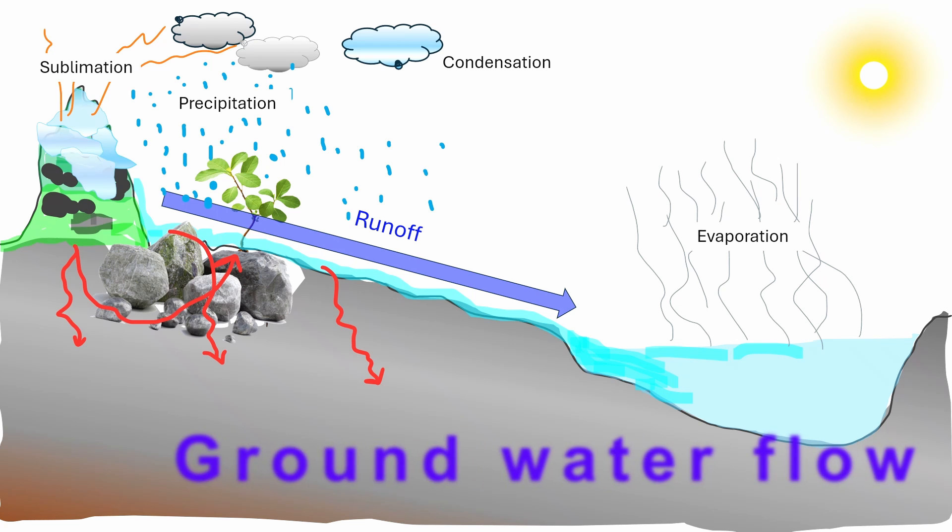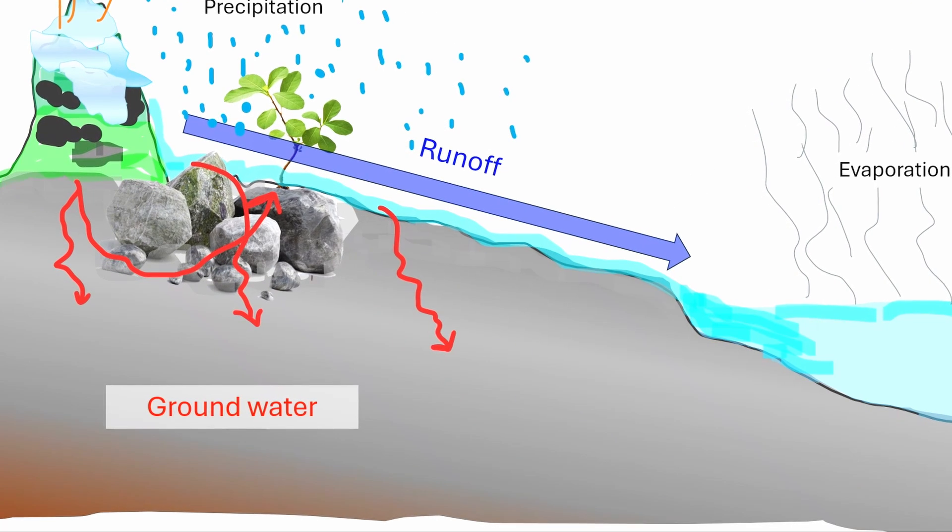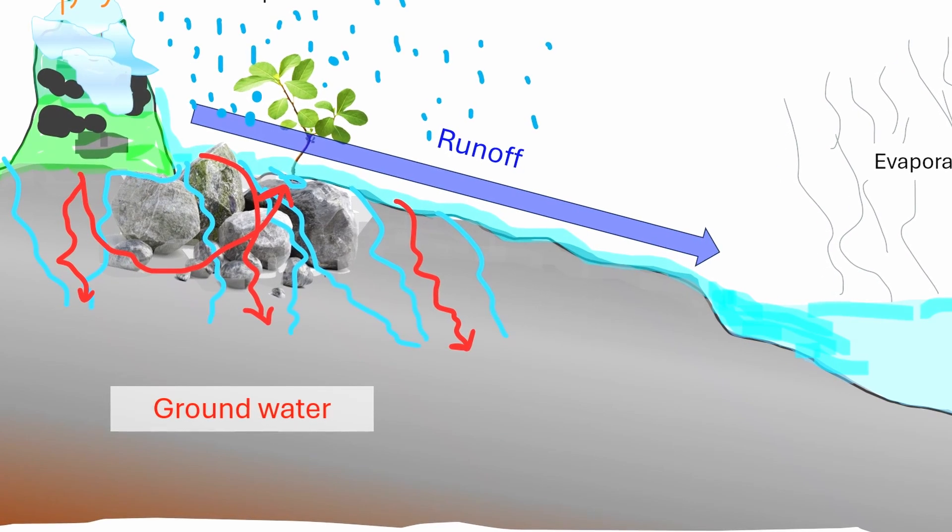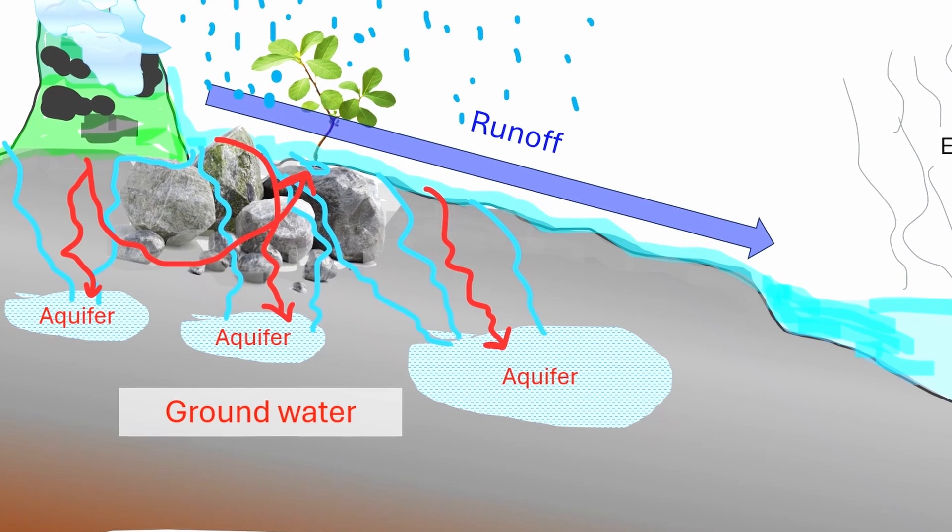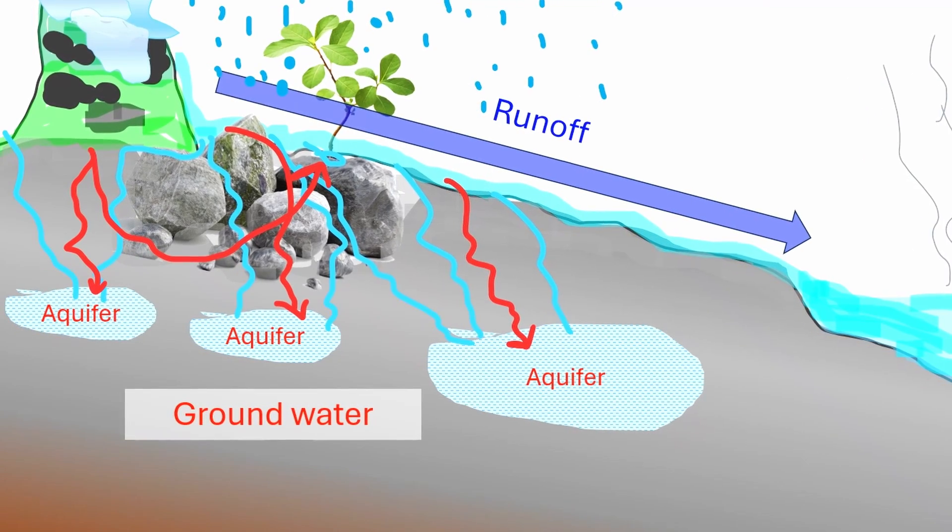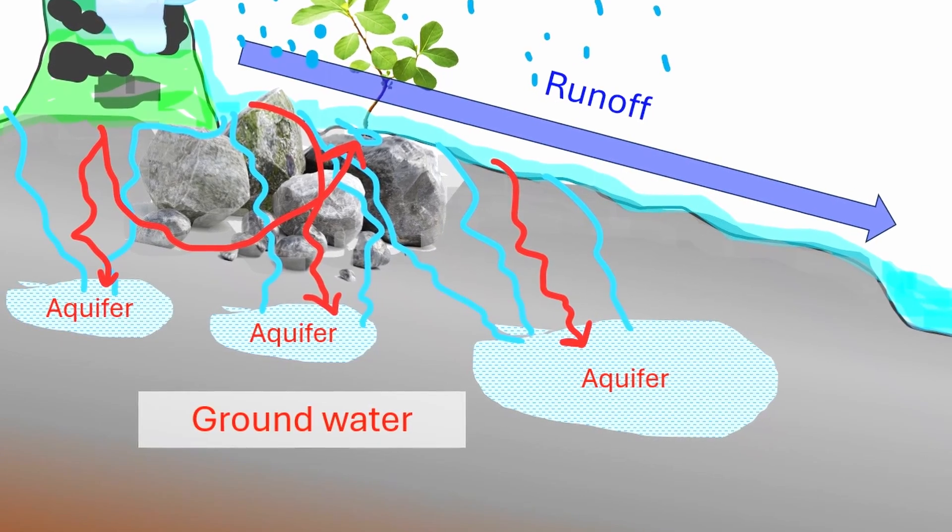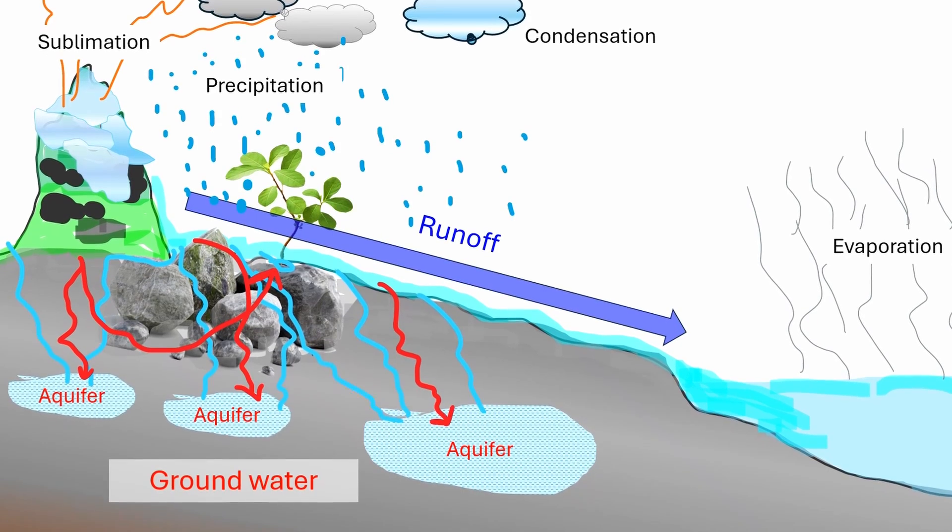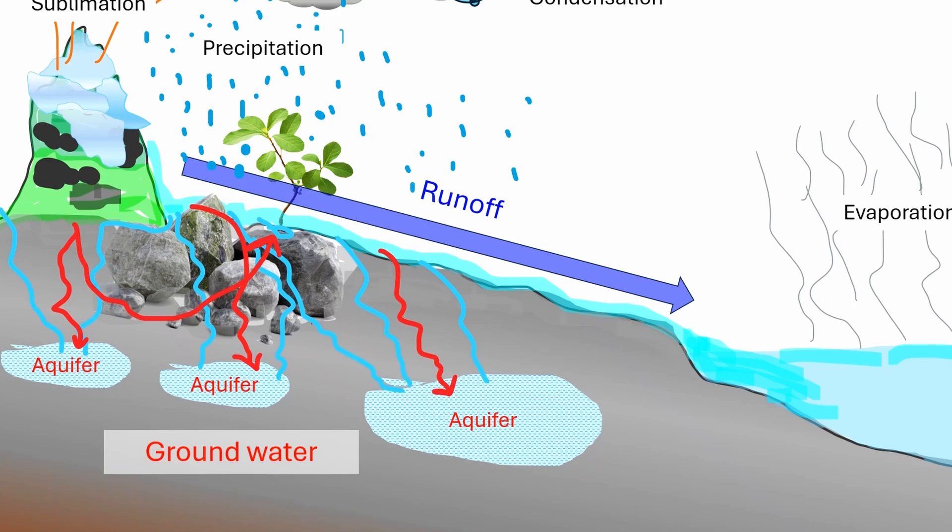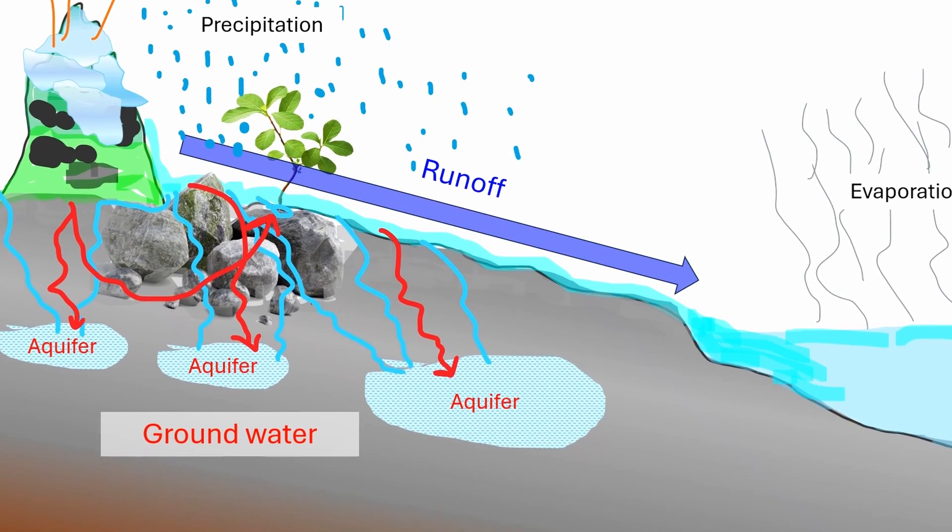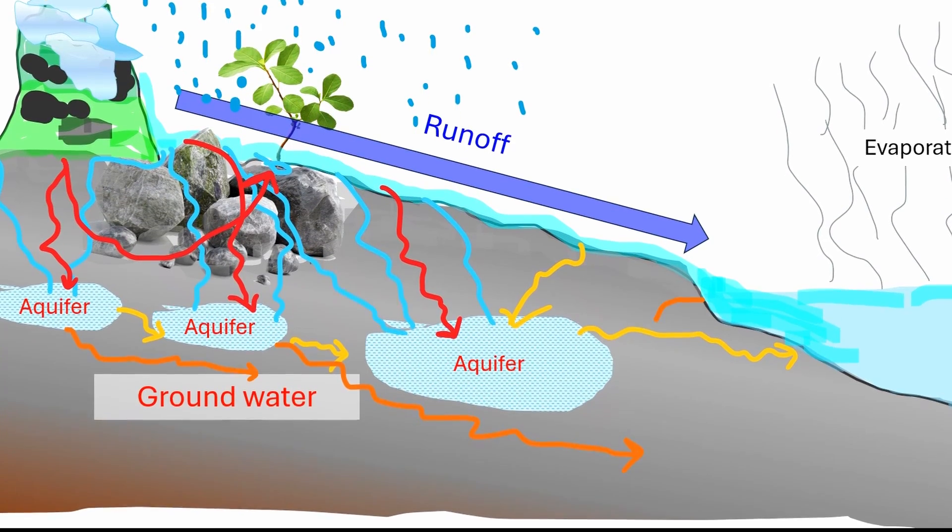Groundwater flow: A portion of the infiltrated water becomes groundwater, which moves slowly through permeable rock layers called aquifers. Groundwater flow plays a crucial role in sustaining base flow in rivers and providing a reliable water supply for wells and springs. Much of the water that fell as rain soaks into the ground through infiltration. Here it either infiltrates deep into the rock and forms huge stores called aquifers, or it remains relatively close to the surface as groundwater flows. Some of the groundwater emerges from springs and surface water bodies, eventually making its way back to the ocean.